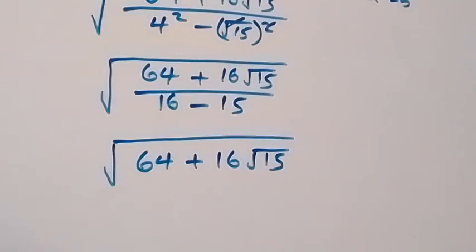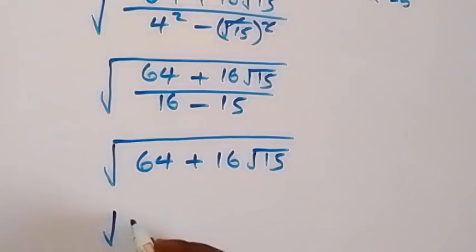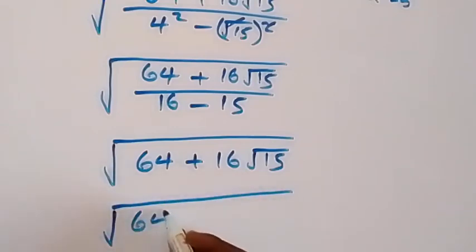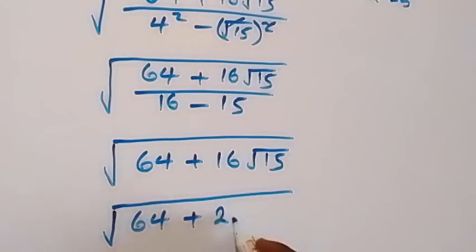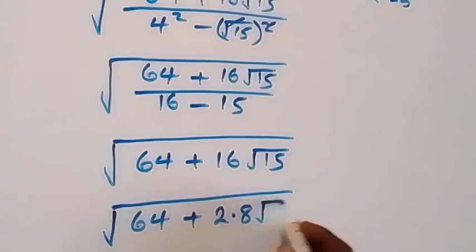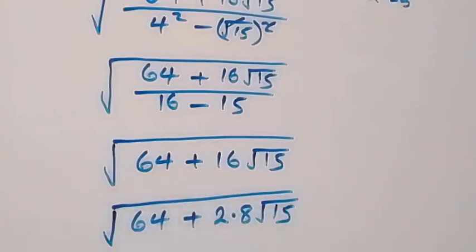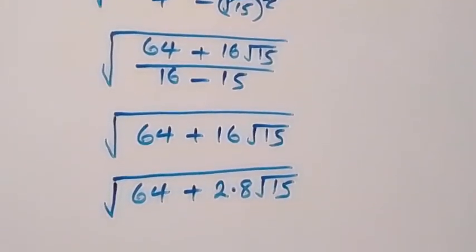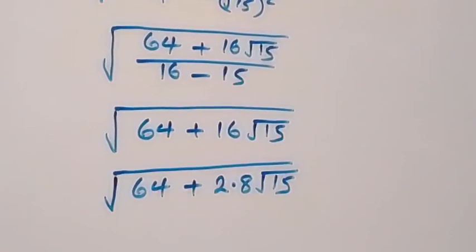We have square root of 64 plus 16 root 15 over 1, which is the same thing as square root of 64 plus 16 root 15. Next, we can write 16 as 2 times 8, so we have square root of 64 plus 2 times 8 times root 15.